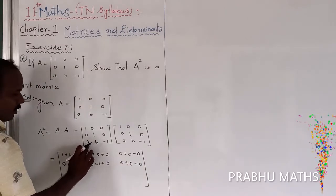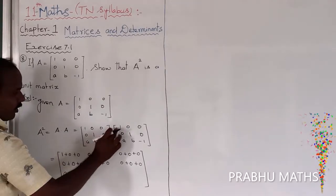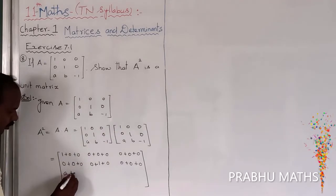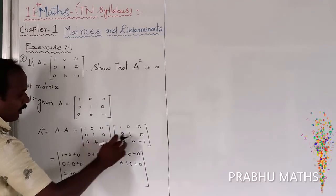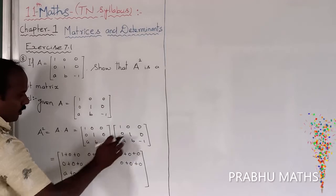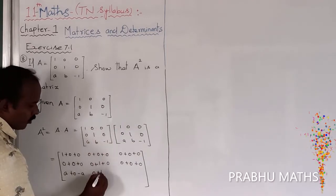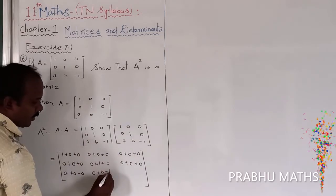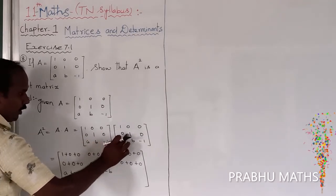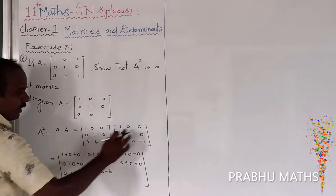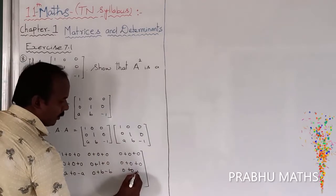Third row, first column: A into 1 plus 0 plus minus A — equals 0, with A and minus A cancelling. Third row, second column: A into 0 plus B into 1 plus minus 1 into B — that is B minus B, equals 0. Third row, third column: A into 0 plus B into 0 plus minus 1 into minus 1 — equals plus 1.